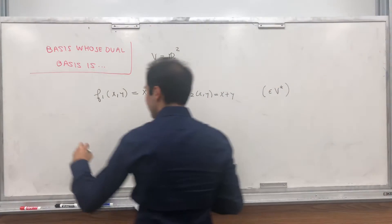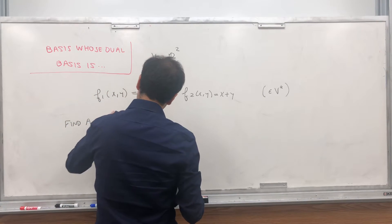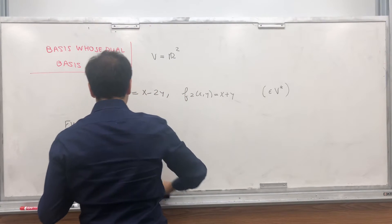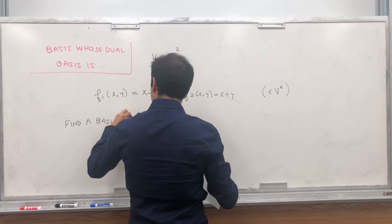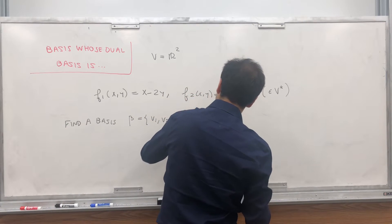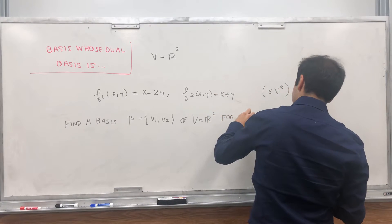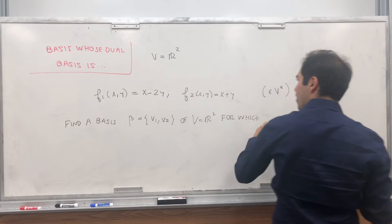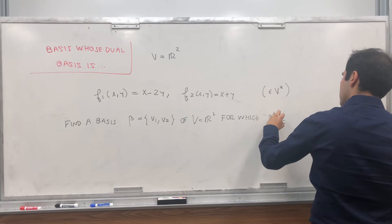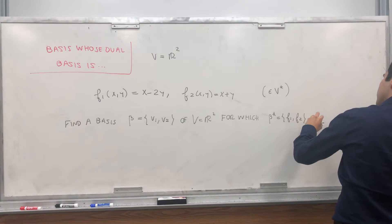And the goal is find a basis, I guess let's call it beta. Beta equals V1 and V2 of V, which is R2, for which f1, f2 is a dual basis. Beta star equals f1, f2 is a dual basis.